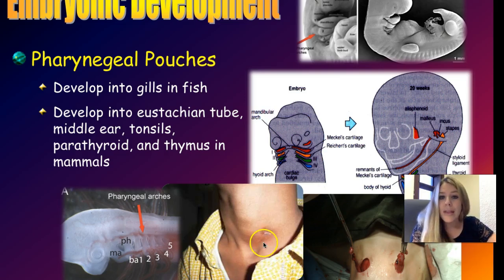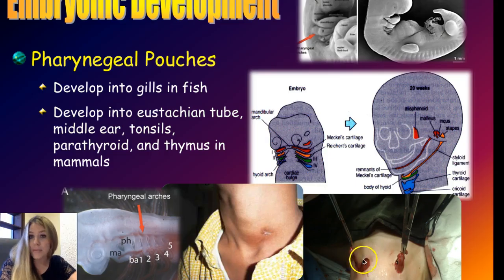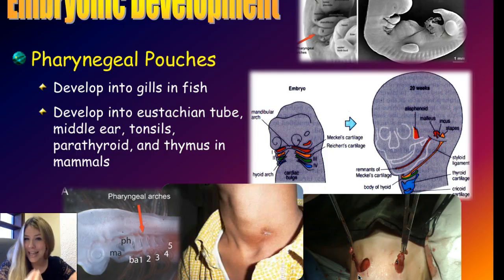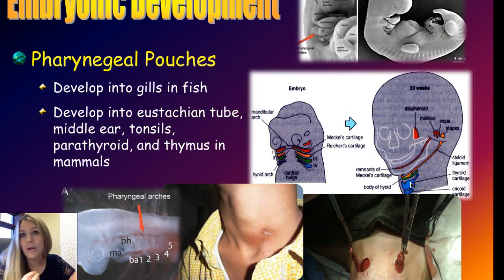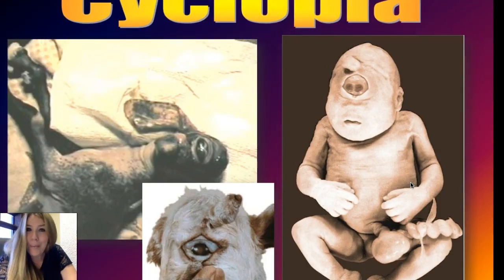Once in a while in humans, these arches don't completely close up, and you end up with adults who have open branchial slits or pharyngeal pouches that must be surgically sewn up. Amazingly, the same genes that close up and form these structures in us are the same genes that code for gills in fish.